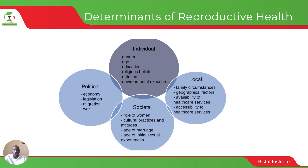Local factors include social support, family circumstances, geographical factors, access to health care services, and availability of health care services. Societal factors include the role of women, gender equality, traditional cultural practices, attitudes, age of marriage, and age of first sexual activity. Political environment factors include the economy, legislation, migration laws, and peace and stability — including issues related to war.